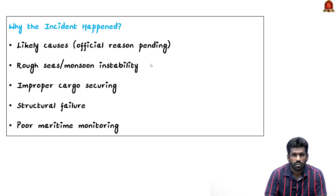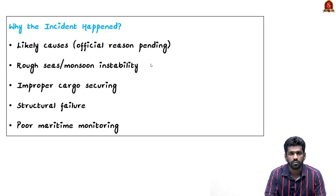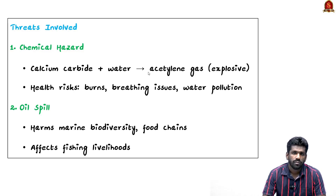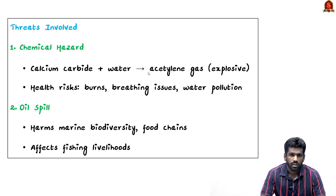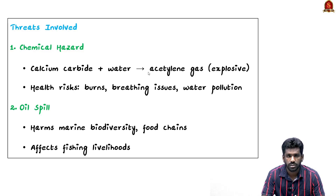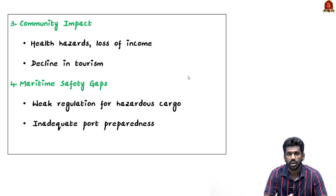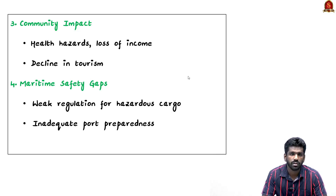This situation poses several risks. Calcium carbide can react with water and release acetylene gas, which is highly flammable and can cause explosions, chemical burns, breathing problems, and water contamination. The oil spill also threatens marine life, affecting the food chain and the income of coastal fishing communities. People along the coast face serious health problems due to toxic gas exposure, and their livelihoods are impacted as fishing and beach tourism are now restricted.